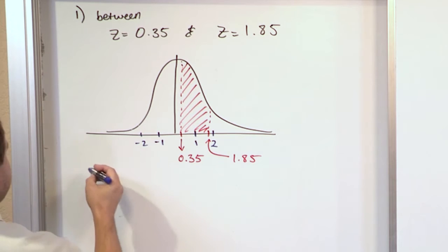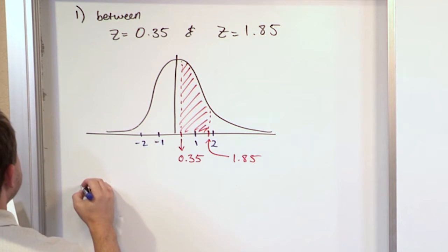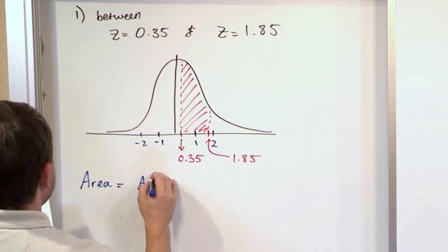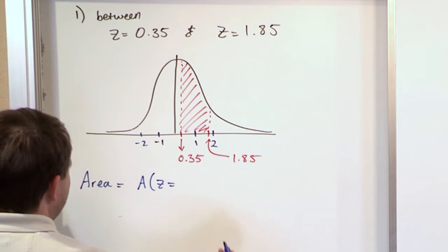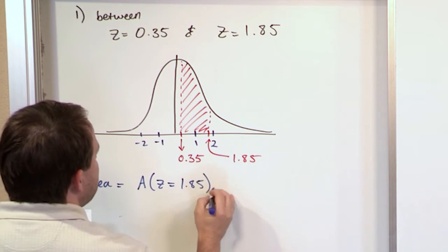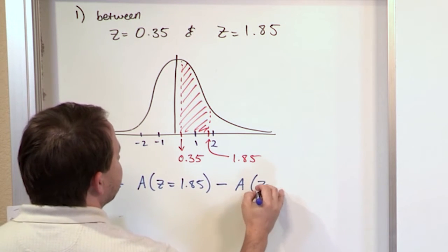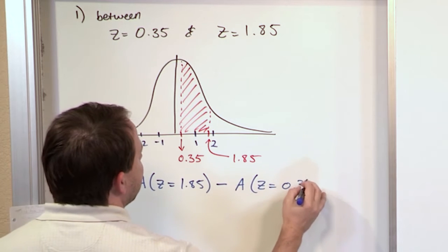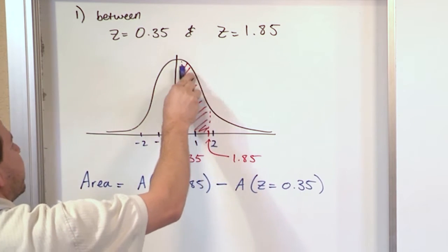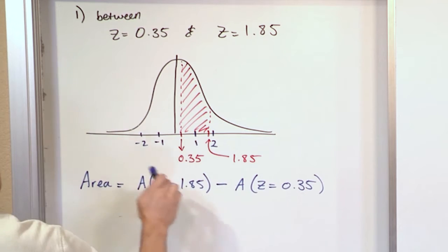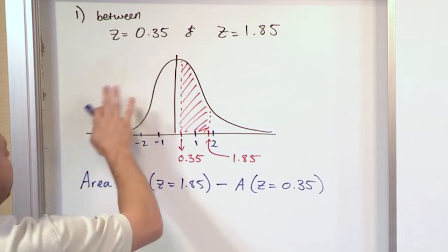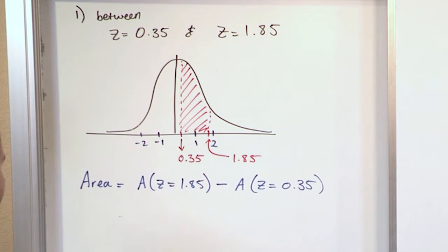The area is going to equal the area you get from looking up z = 1.85 minus the area when you look at z = 0.35. You find the area from the table for the larger z value — which is all of this — minus the area for the smaller z value — which is all of this. When you do the subtraction, you're left with just the area between them.